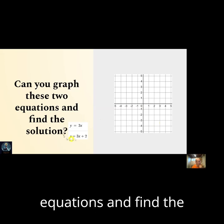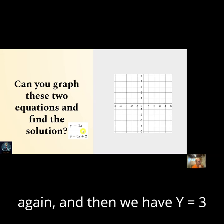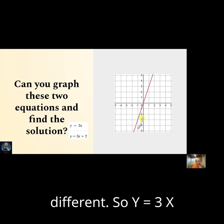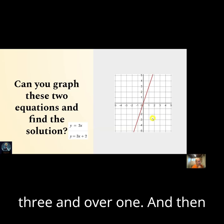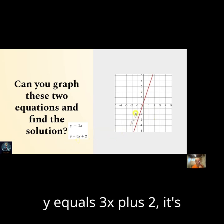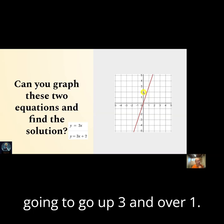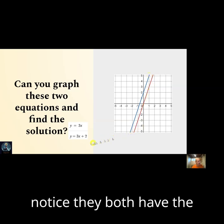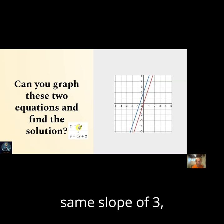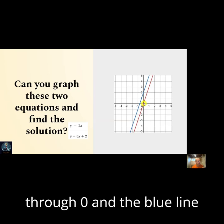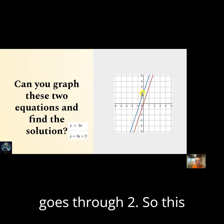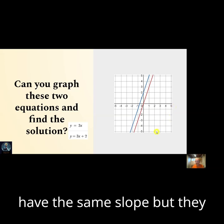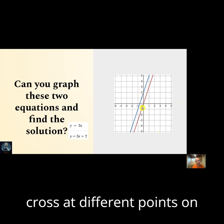Can you graph these two equations and find the solution? So we have y equals 3x again, and then we have y equals 3x plus 2. So y equals 3x starts at the center, goes up 3 and over 1, and then y equals 3x plus 2 is going to start at 2 and it's going to go up 3 and over 1. So we graph that and we notice they both have the same slope of 3, except the red line goes through 0 and the blue line goes through 2. So this is no solution because those two lines are parallel. They have the same slope but they cross at different points on the y-axis, so they're never going to touch.